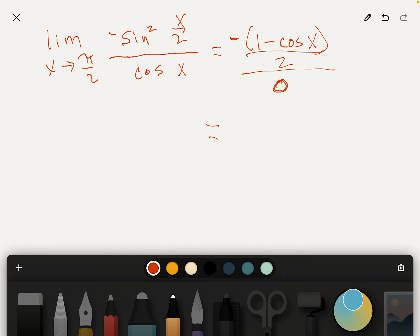The numerator, because as x goes to π over 2, the numerator just becomes 1 minus 0 over 2, or negative 1 half over 0.